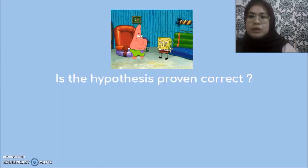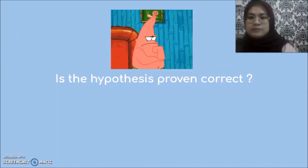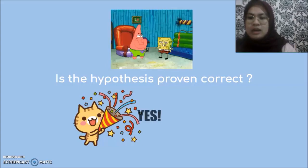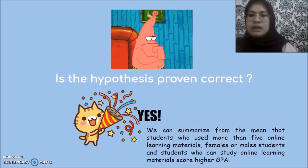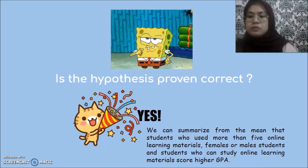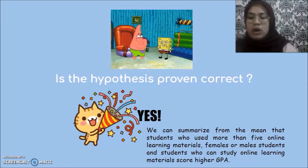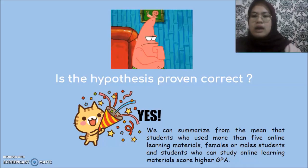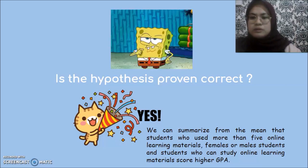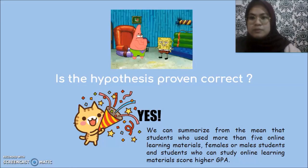Is the hypothesis proven correct? The answer is yes. We can summarize from the mean that students who use more than five online learning materials, whether female or male, and students who can study online learning materials, score a high GPA, mostly at 3.50 or above. This is because it depends on the independent variables that were mentioned.